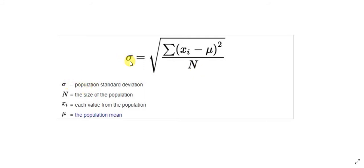Rho is your population standard deviation, n is the size of the population, x is each value from the population, and mu is your population mean.